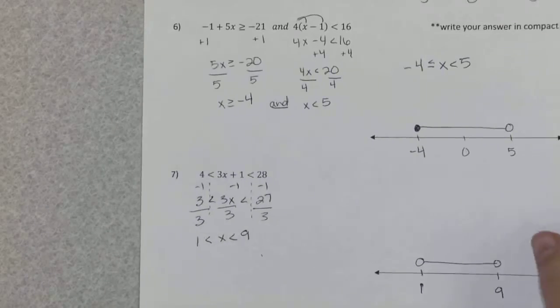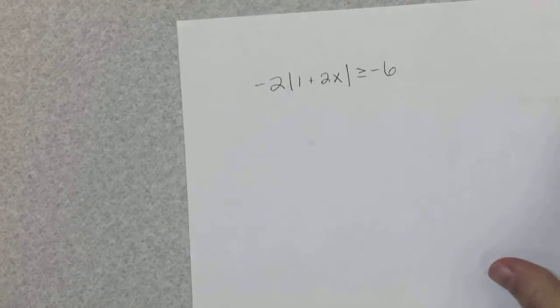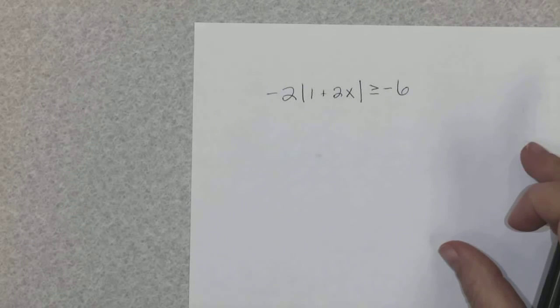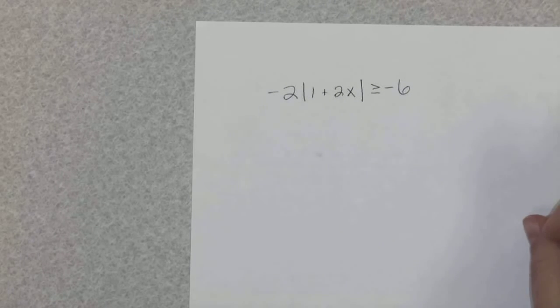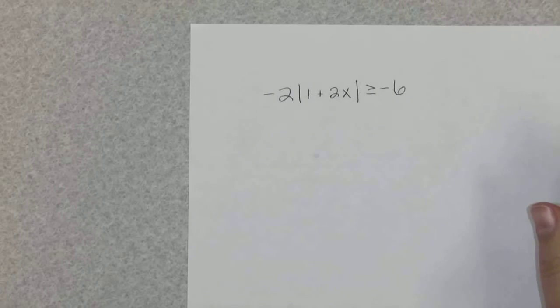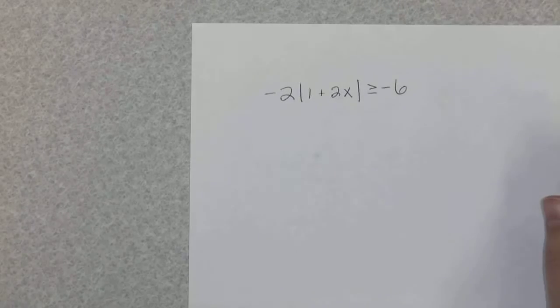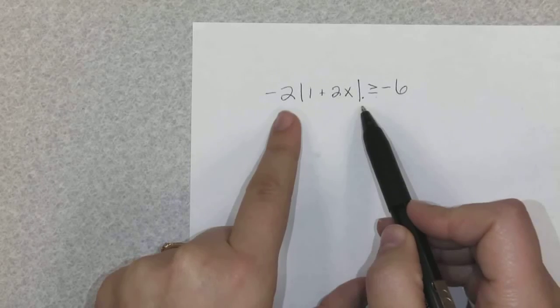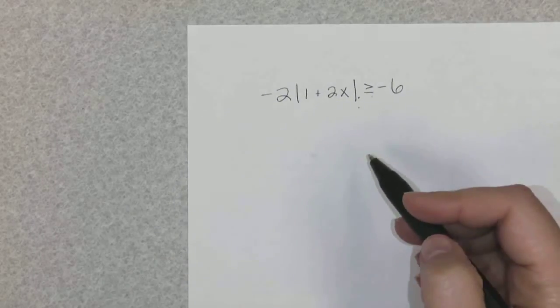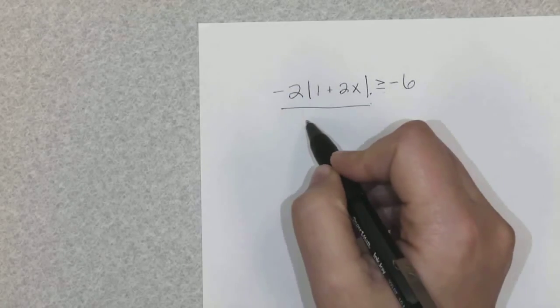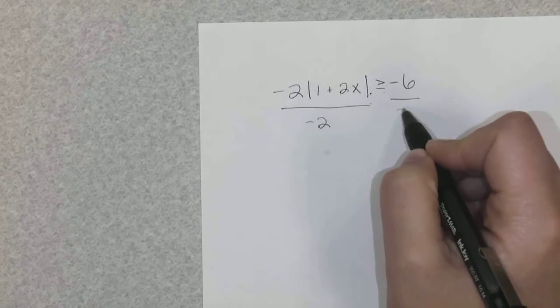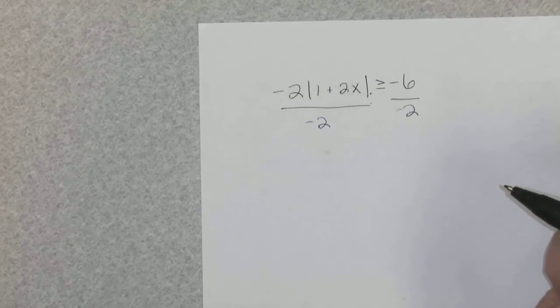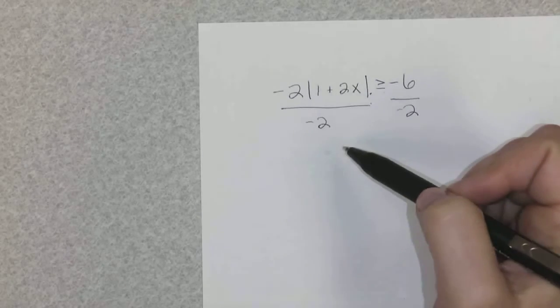All right, now I also have one more example I want to go over that I just wrote down here on the back of this page. This is actually number 14 on the purple compound inequalities worksheet that you had gotten last week. I just wanted to do one example here where there was something happening outside of the bars, these absolute value bars. So to start this problem, I would just divide both sides of my inequality by negative 2.